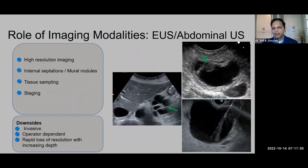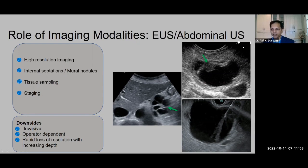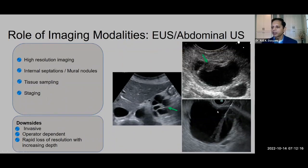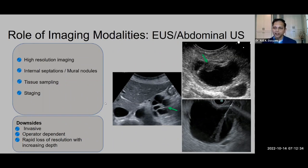Abdominal ultrasound is excellent at characterizing the internal architecture of cystic lesions, but is limited in patients with large body habitus or for lesions in the distal body and tail. We rely heavily on endoscopic ultrasound, which provides very high resolution images with nice characterization of the internal architecture, identifies septations and mural nodularity better than CT and often better than MR, and allows tissue sampling or cyst fluid analysis. Downsides of EUS include being a relatively invasive, operator-dependent procedure, and limited assessment of larger cystic lesions due to loss of resolution with increasing depth.